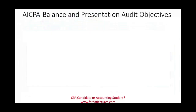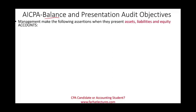We're going to move from transaction to balance and presentation audit objectives. Transactions deal with the income statement, while account balances deal with assets, liabilities, and equity. Management is making the following assertions when they present assets, liabilities, and equity accounts — not transactions.